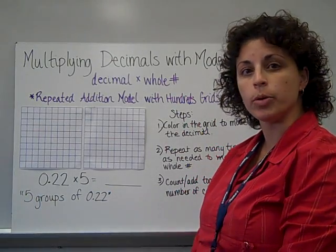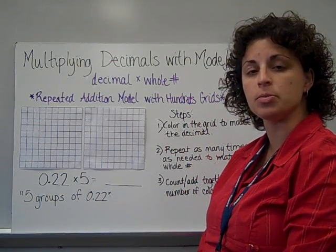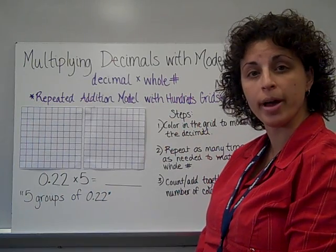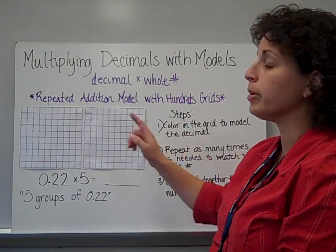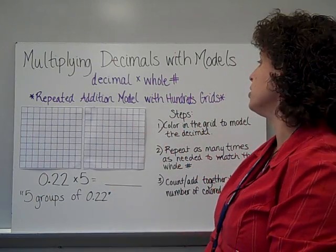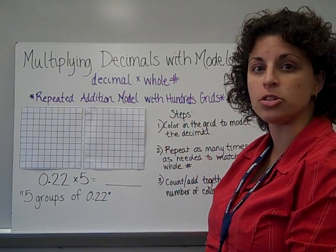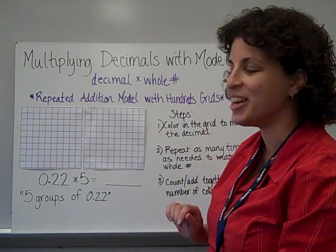There are many different models that we will use to multiply decimals, either with a whole number or by another decimal. Our first model is for a decimal times a whole number, and it's the repeated addition model that requires us to use a hundredths grid, or more than one hundredths grid.